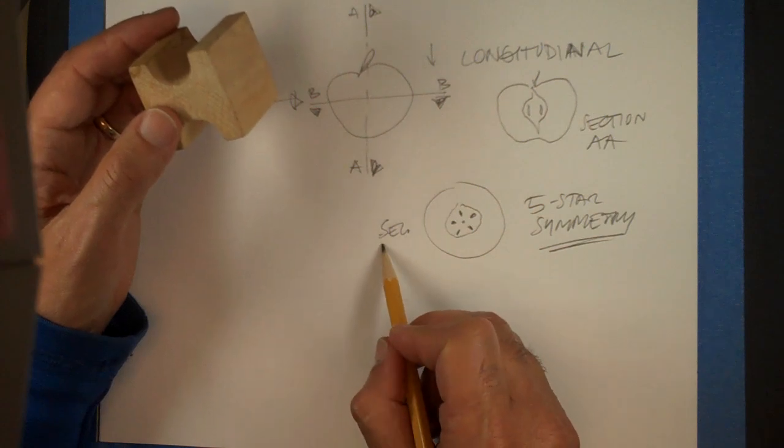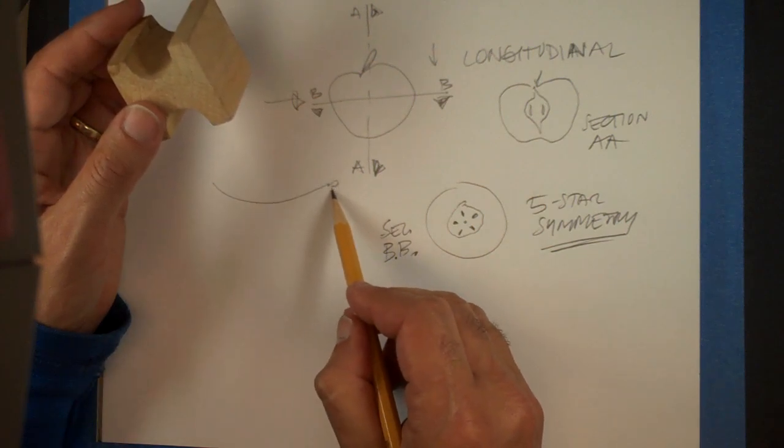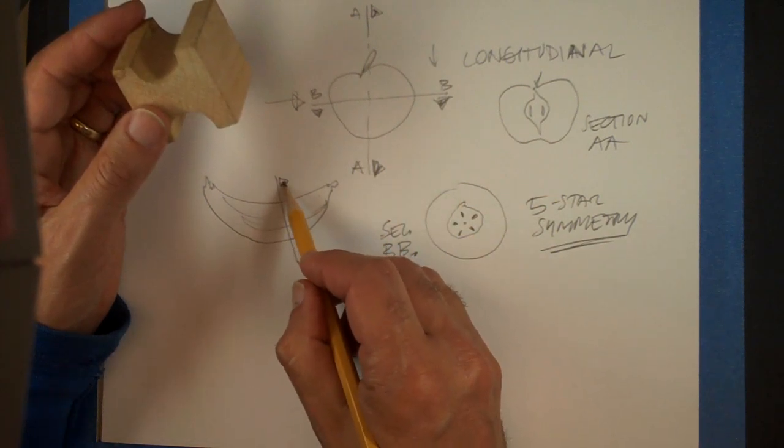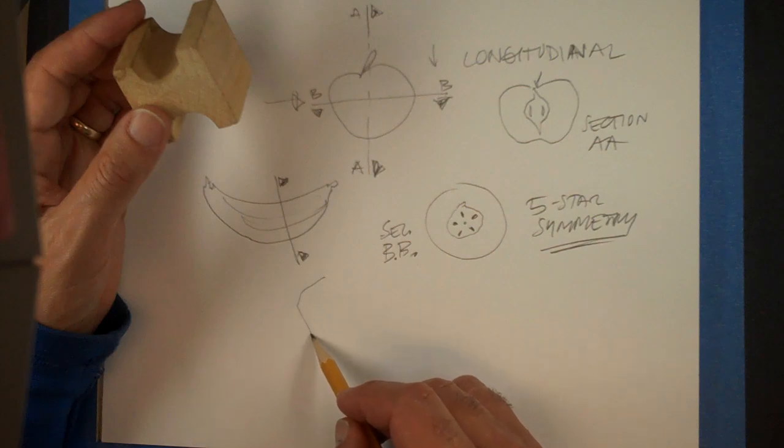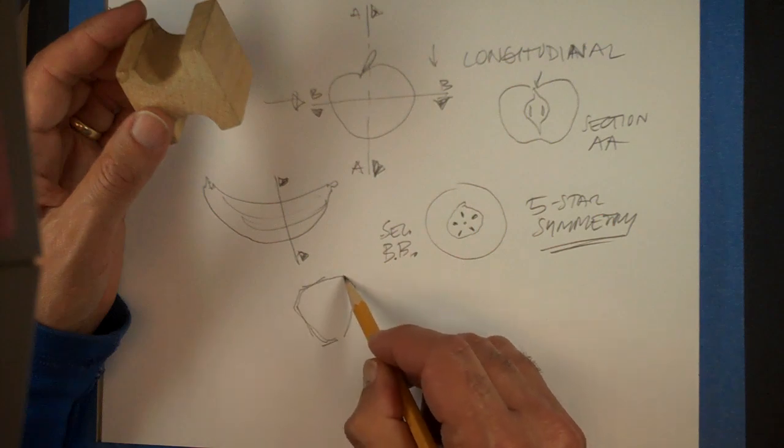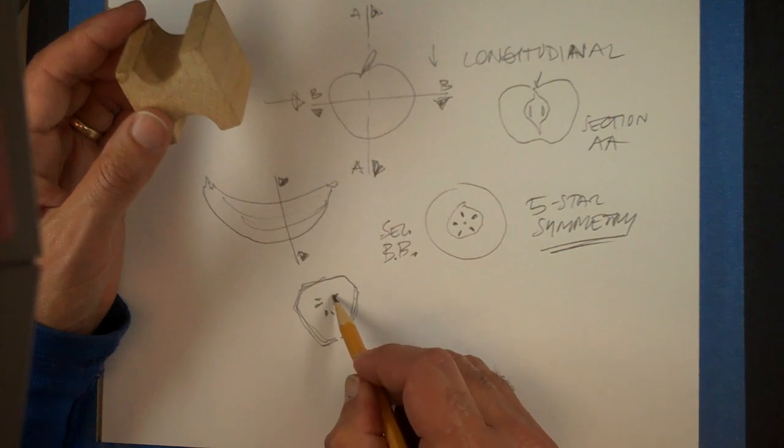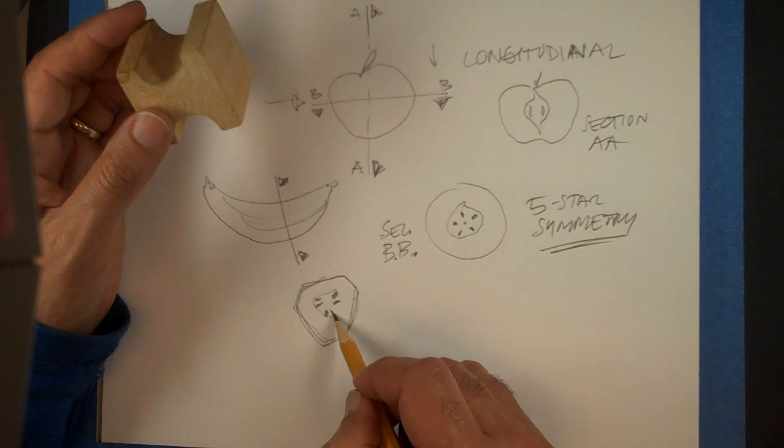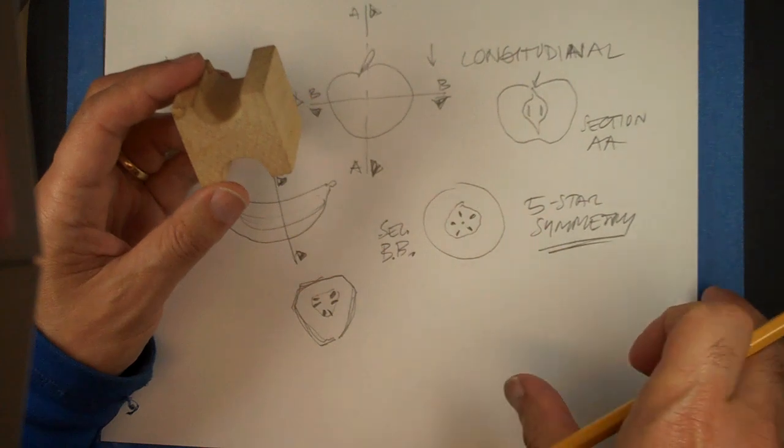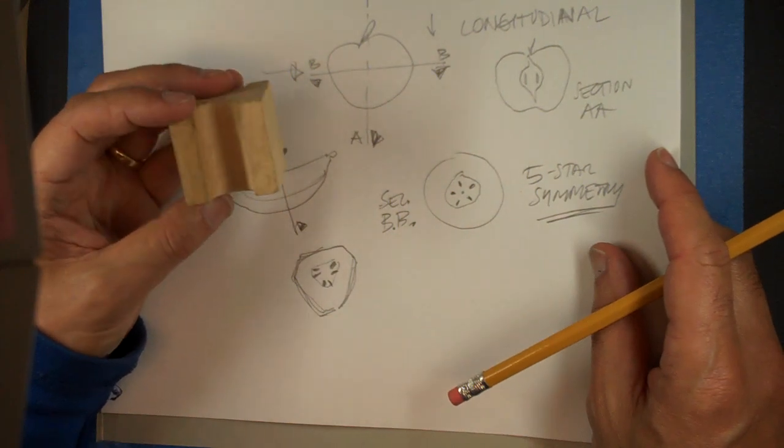So that's another way to say that cross sections are meant to reveal things that are not immediately obvious from the regular views. Another example was that if you take a banana and you do a slice through a banana, it turns out that the banana is a slightly triangular shape with seeds aligned in a triangular fashion.